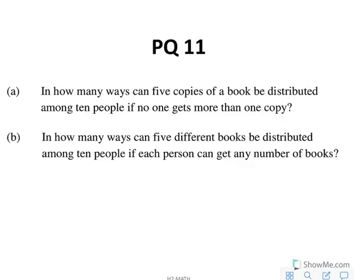It's either you choose - we have to distribute all five copies out and each person at most one. We're actually choosing five people, choosing five people where each person gets one, because we cannot have one person getting more than one.